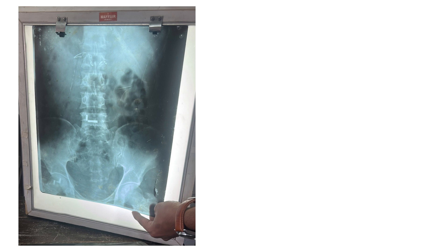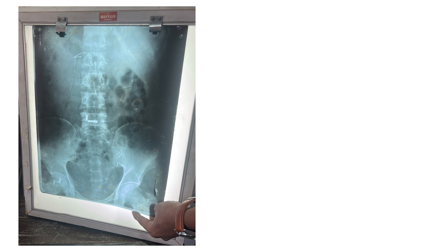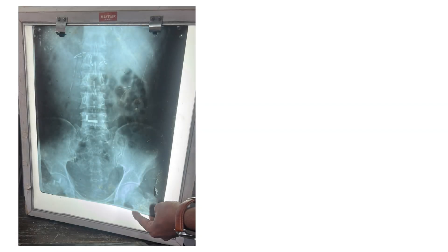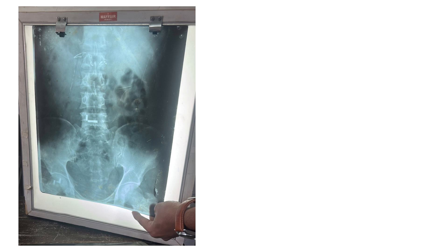The soft tissue shadows that are visible are that of the diaphragm, the psoas major muscle, the kidney, the liver, and the spleen. The gas in the fundus of the stomach may be seen as a large bubble, which appears as a dark shadow. Intestinal gas may also be seen. This X-ray may be used to check for any sort of intestinal obstruction.